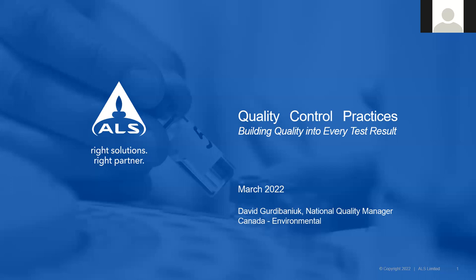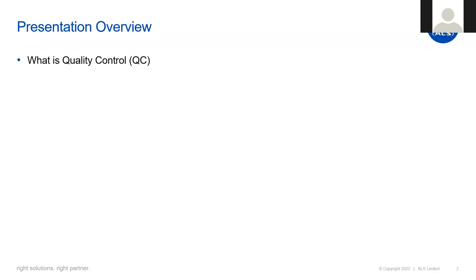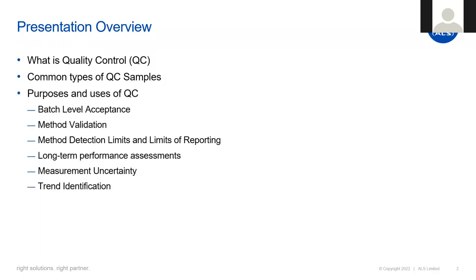Today we're going to be discussing quality control practices, and we're going to be looking at how these systems get propagated through to provide real benefits to both our clients and our laboratories. As an overview, we're going to be discussing what quality control actually is, a few common types of quality control samples, and then we'll dive deeper into some different uses of quality control sample results.